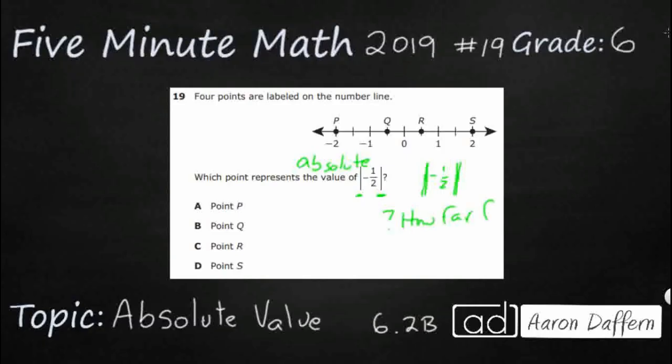We have zero on our number line. Let's take a look at each of these numbers and see what the absolute value of each number is. P is negative two.